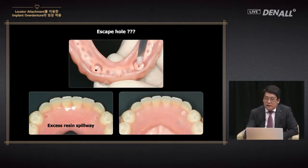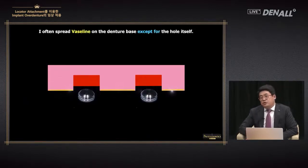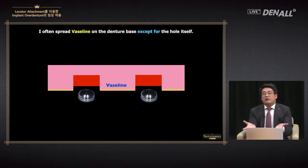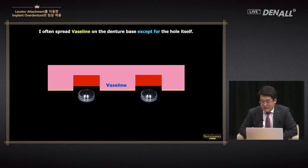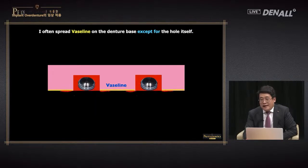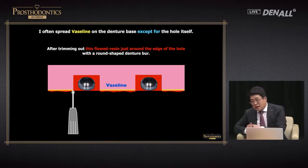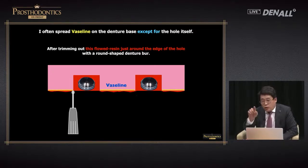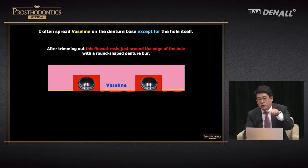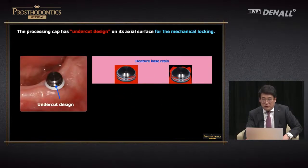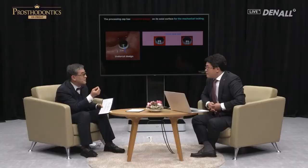As a tip: when you apply resin, don't apply too much — put in about half. Apply Vaseline on the outside of the denture, not the inside, so it flows very thin. When using a denture bur to remove excessive resin, you may be unsure whether you're removing resin or denture base. I use a round-shaped denture bur to trim out the excessive resin around the hole. If there's an insufficient area, you can use a micro brush to adjust it, and if there's an air bubble you can use a micro brush and then position the denture.